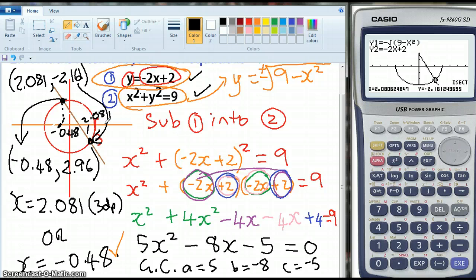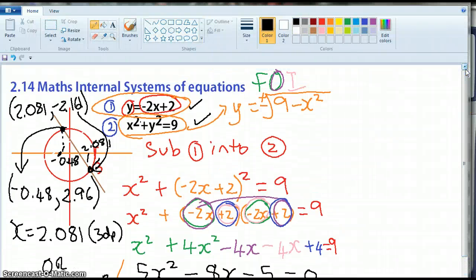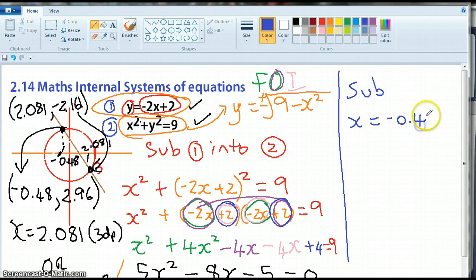So I've got my answer with my graphics calculator. Okay. So what next? Given that this is an algebra assessment I actually need to show my working so I need to say sub x equals negative 0.48 into equation 1 y equals negative 2x plus 2 to get y equals and I don't actually have to work that out because I've actually got my answer was 2.96. Okay and so the point of intersection